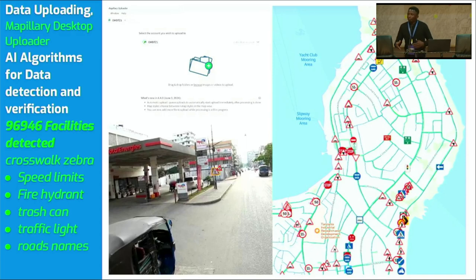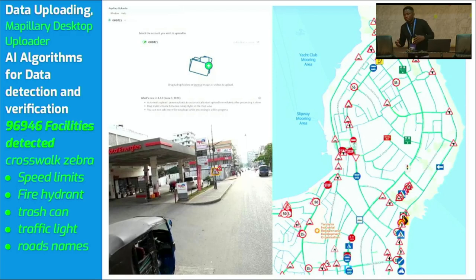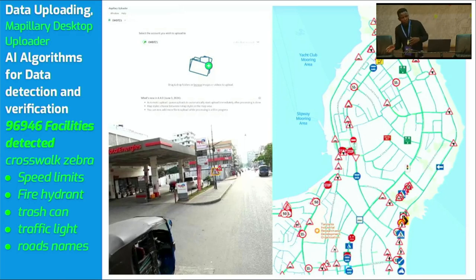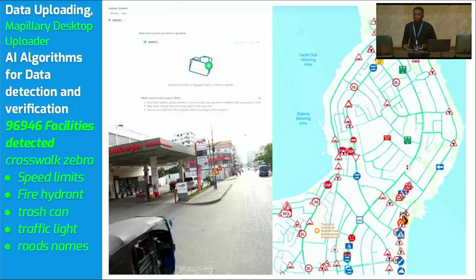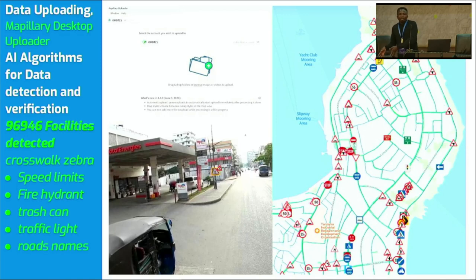After uploading the image to Mapillary, it automatically detects all features — you don't need to manually identify what each thing is; it detects features itself from the uploaded images. But you need to do some verification to know if the features which have been detected correspond with what you are seeing. You just use the image to compare yourself, and it is different from taking data from someone who collected from the site where you don't know if it's true or not — when you have an image to compare what has been detected with what you see, it is easier to update the data.